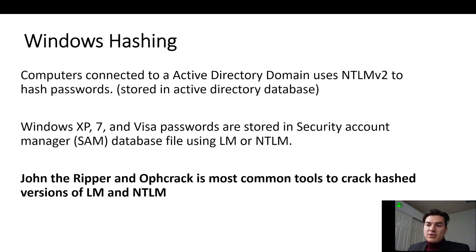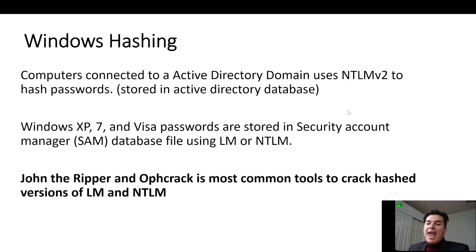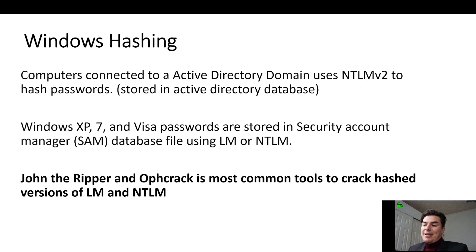In Windows hashing, computers that are connected to an Active Directory domain natively use NTLM version 2 to hash those passwords, and they're stored in the Active Directory database. Often, John the Ripper and OPH Crack are used to crack those hash versions in the LM and NTLM.